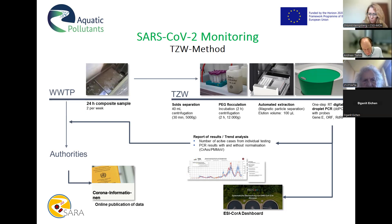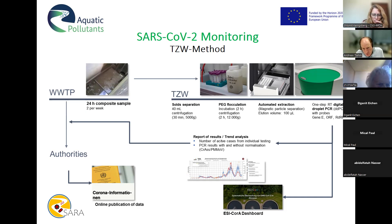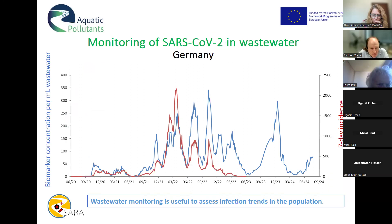We can follow the trends in copy numbers of SARS-CoV-2 nucleic acids. The results are reported and shown on the homepage of our municipality in Karlsruhe so everyone can look them up. Data are also collected for all of Germany and displayed on a national homepage. We started early in summer 2020, so we have a very long curve.